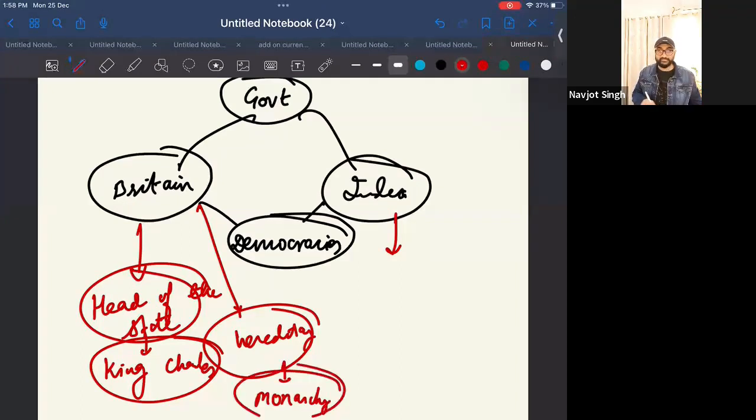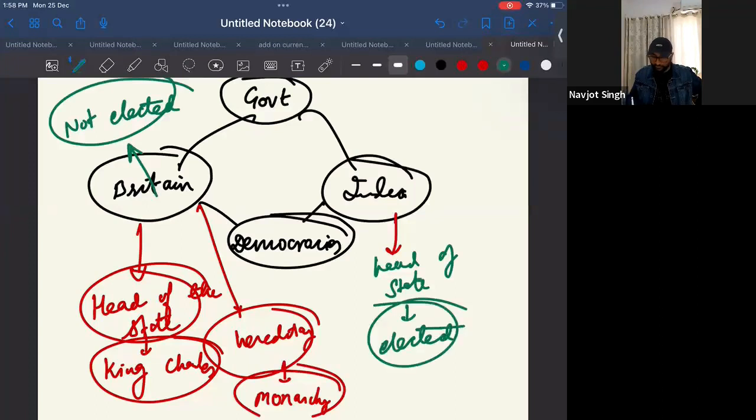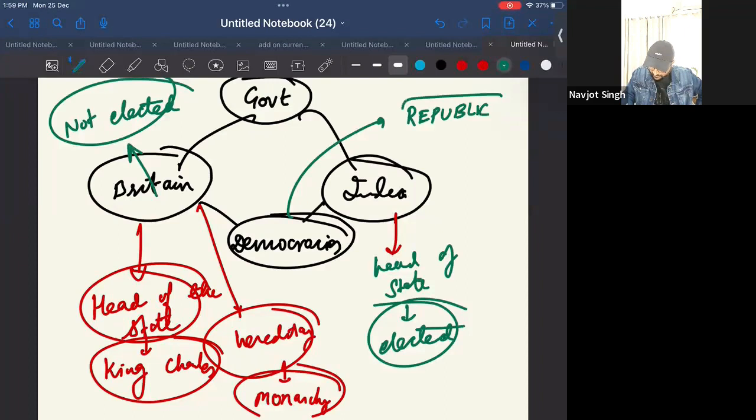So, in monarchies, the head of the state is not elected. So, they are called as monarchies. Now, what happens here? Head of the state is a president. And he is elected. So, governments or democracies with elected head of the states are known as republic. Republic. So, it means that the head of the state is elected.